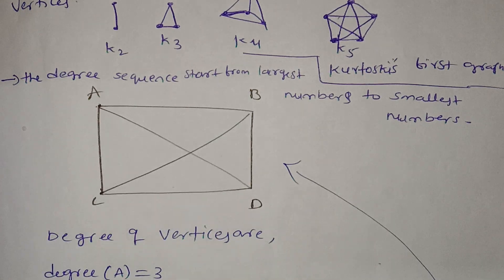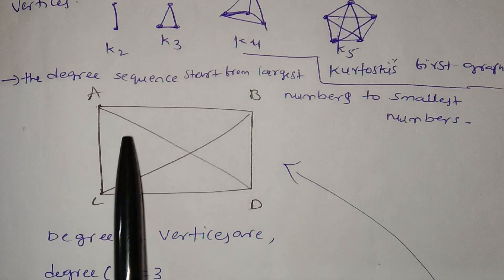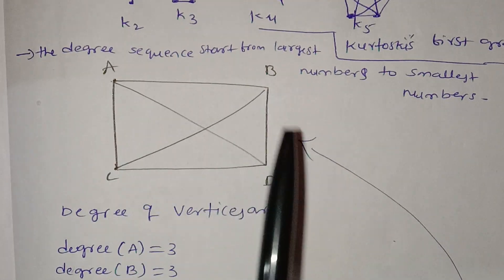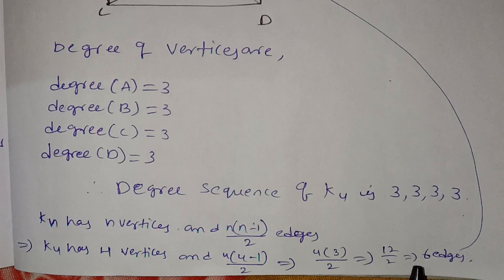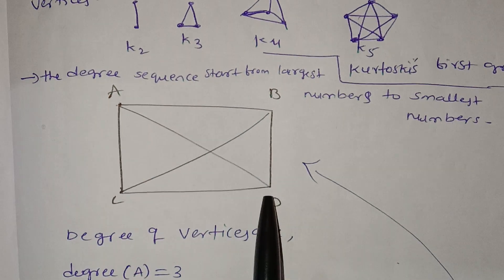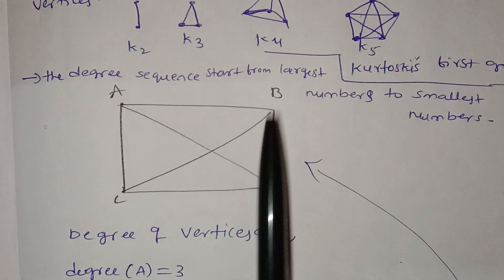You can find the degrees in increasing order. For K4 we have 4 vertices: 1, 2, 3, 4. We already calculated 12 / 2 = 6 edges. We have 6 edges: 1, 2, 3, 4, 5, 6.